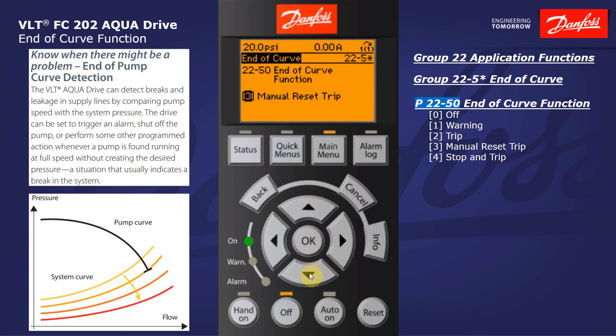The only difference between trip and manual reset trip is that if we select trip, the automatic reset parameter will allow this alarm to be reset automatically, whereas if we select manual reset trip, manual intervention is required to reset the alarm — the operator would actually have to press the reset key. That's what I'm going to select here for our demonstration, but I'm going to go ahead and explain the other choices as well.